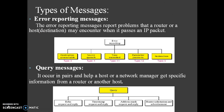There are two types of ICMP messages: error reporting messages and query messages. Error reporting messages report problems that a router or a host may encounter when it processes an IP packet. The first block is destination unreachable. When a router cannot route a datagram or a host cannot deliver a datagram, the datagram is discarded and the router or host sends a destination unreachable message back to the source host that initiated the datagram.